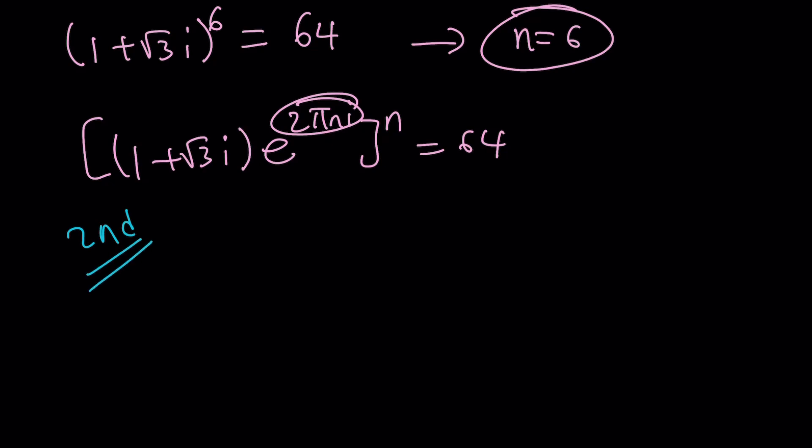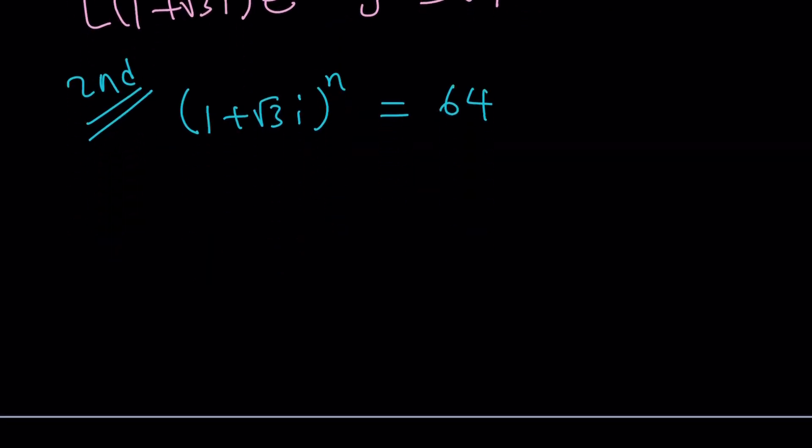So my second approach is kind of like going directly with the polar form because guess and check may not always be efficient. You know sometimes you may not even find the answer but it's always worth a try. Anyways so how do you write a complex number in polar form? Thanks to Euler we have something called r e to the i theta. Great. R is the modulus or the absolute value and theta is the argument or the angle.